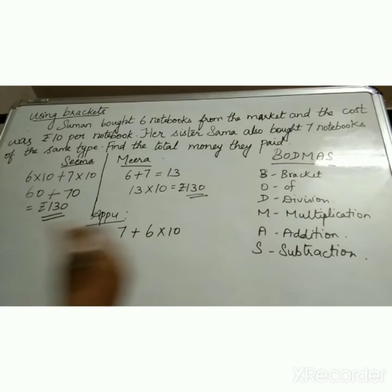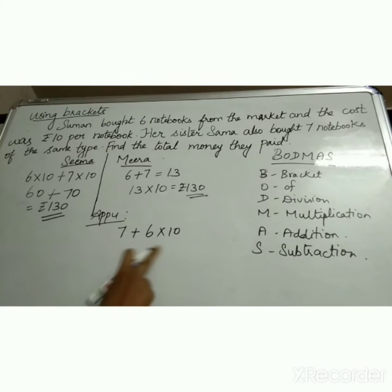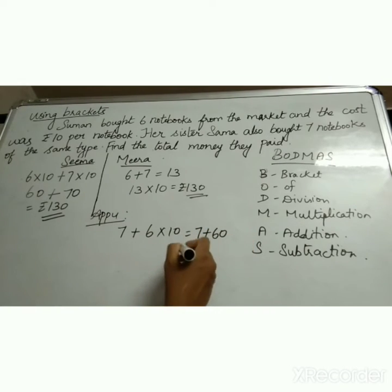He is calculating this way, 7 notebooks and 6 notebooks and into 10. Now as I told you in BODMAS, multiplication comes first. So we have to multiply this first. So it is 7 plus 60 is equal to rupees 67. Now Appu is getting the answer as 67.